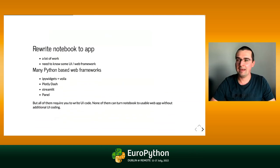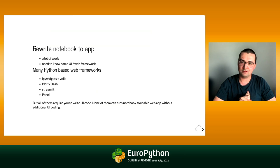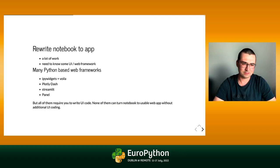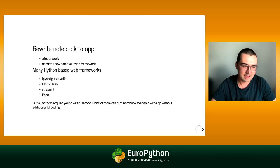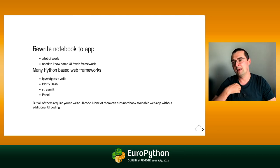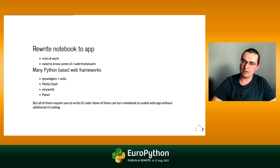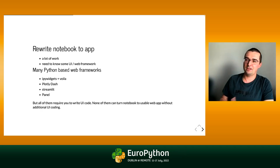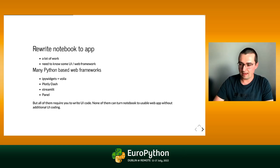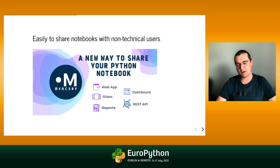If you want interactive results, you are forced to rewrite all your results into some UI or web framework. There are plenty of Python-only web frameworks to show results as interactive web apps — for example, ipywidgets with Voilà, Plotly Dash, Streamlit, or Panel — but all of them require you to write UI code, so they cannot turn your notebook into a web app without changing the code. That is why I created Mercury.